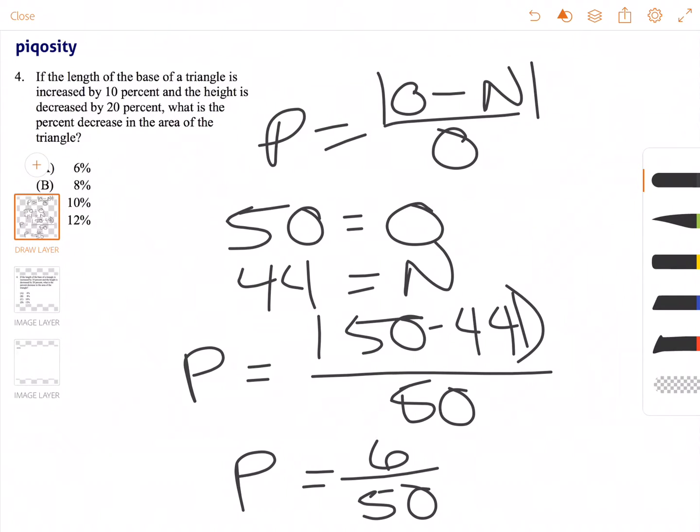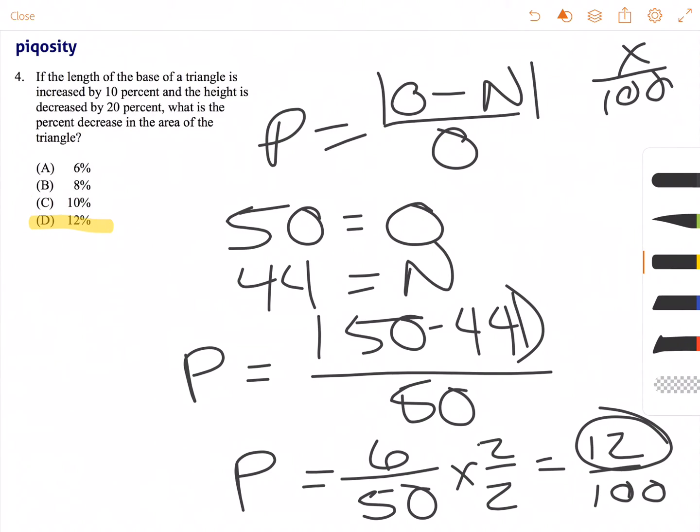Now since percentages, as I mentioned before, the denominator is usually out of 100, we can see that 50 is half of 100. So if we multiply both the numerator and the denominator by 2, we get 12 over 100. So the percent of change is 12%, which the answer choice is D.